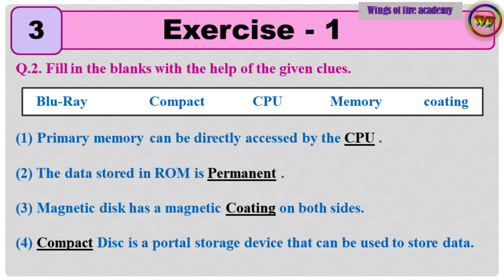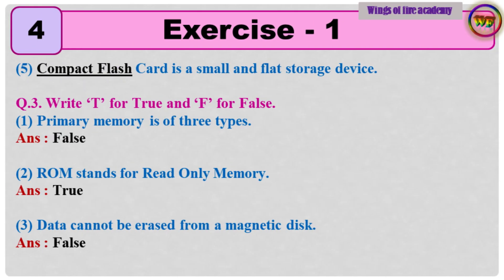3. Magnetic disk has a magnetic coating on both sides. 4. Compact disk is a portable storage device that can be used to store data. 5. Compact flash card is a small and flat storage device.